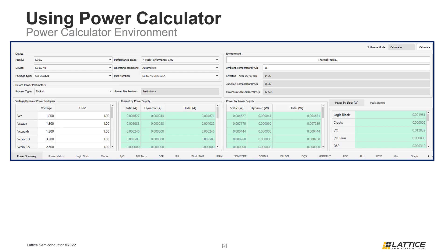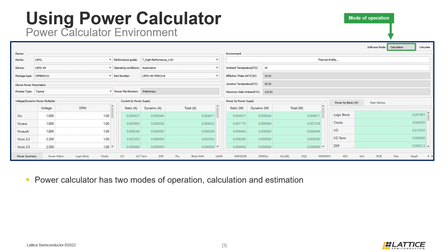The main window of the Power Calculator tool can be seen in the figure on the slide. The Power Calculator window consists of several different sections. At the top of the window is the mode of operation for the Power Calculator tool. Power Calculator has two possible modes. The mode in the example on the slide is called Calculation. Power Calculator will be in Calculation mode after it has completed place and route, or if some device settings are modified after the Power Calculator tool is opened.